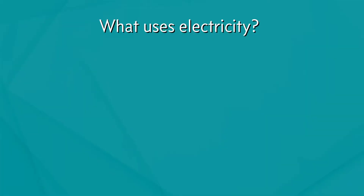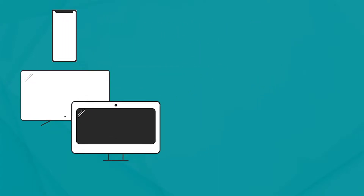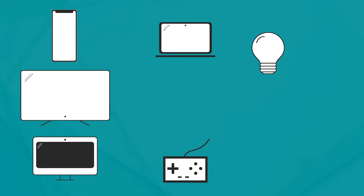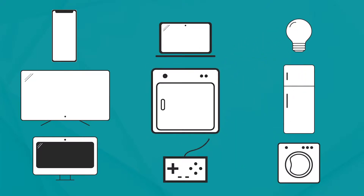Before we go too far along, let's stop for a second and think about some of the things that use electricity. If you're watching this right now, you're using electricity. Electricity powers cell phones, TVs, computers, laptops, video game systems, lights, refrigerators, washers and dryers. Some houses use electricity for their heat in wintertime or air conditioning in the summertime.